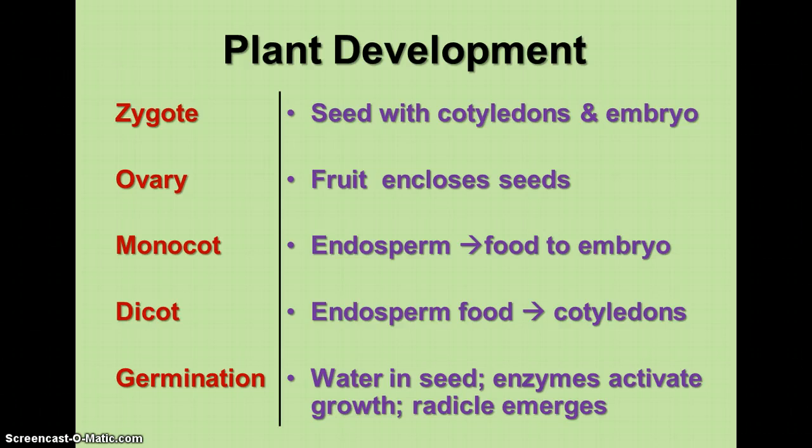In dicots, the endosperm food is found in the cotyledons — the first seed leaves. In most dicots, these are the first leaves that appear above ground, nourishing the growing embryo until it can start undergoing photosynthesis and feeding itself.